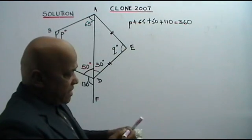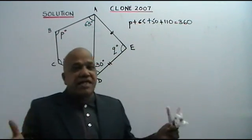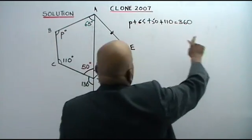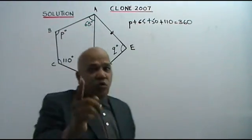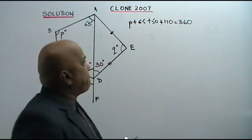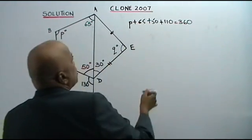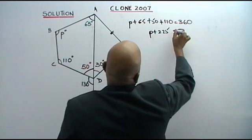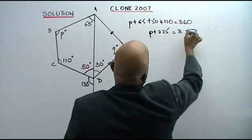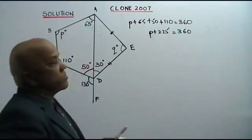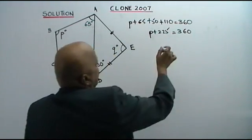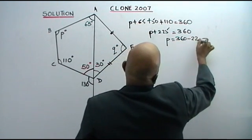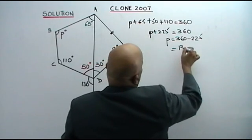Adding up: 65 plus 50 is 115; 115 plus 110 is 225. So P plus 225 equals 360. Therefore, P equals 360 minus 225, which equals 135. That is the value of P.